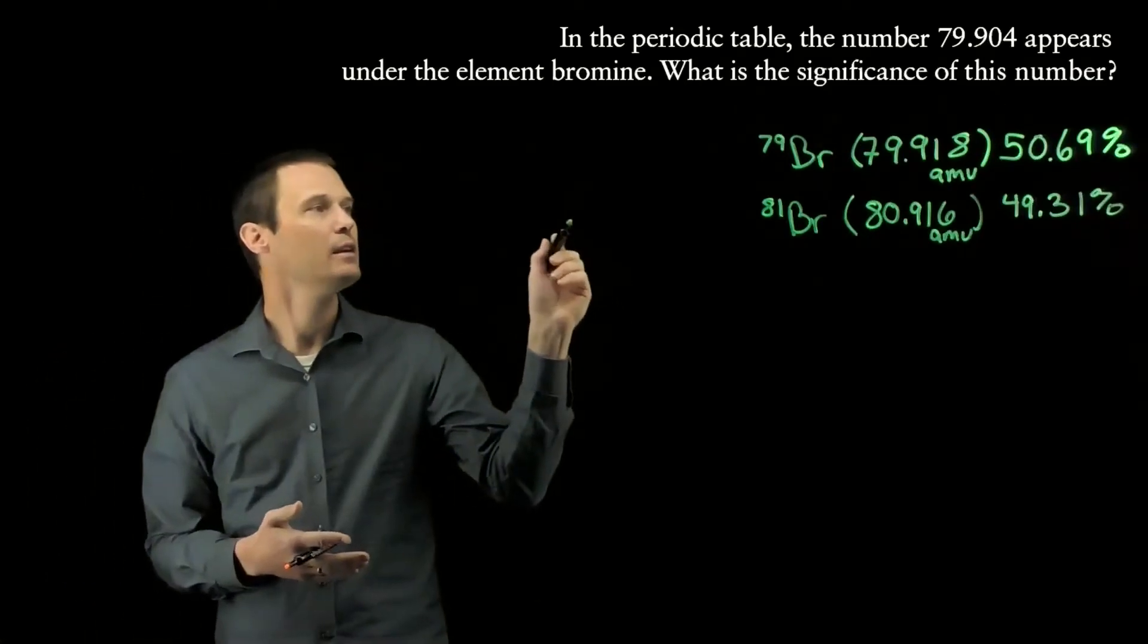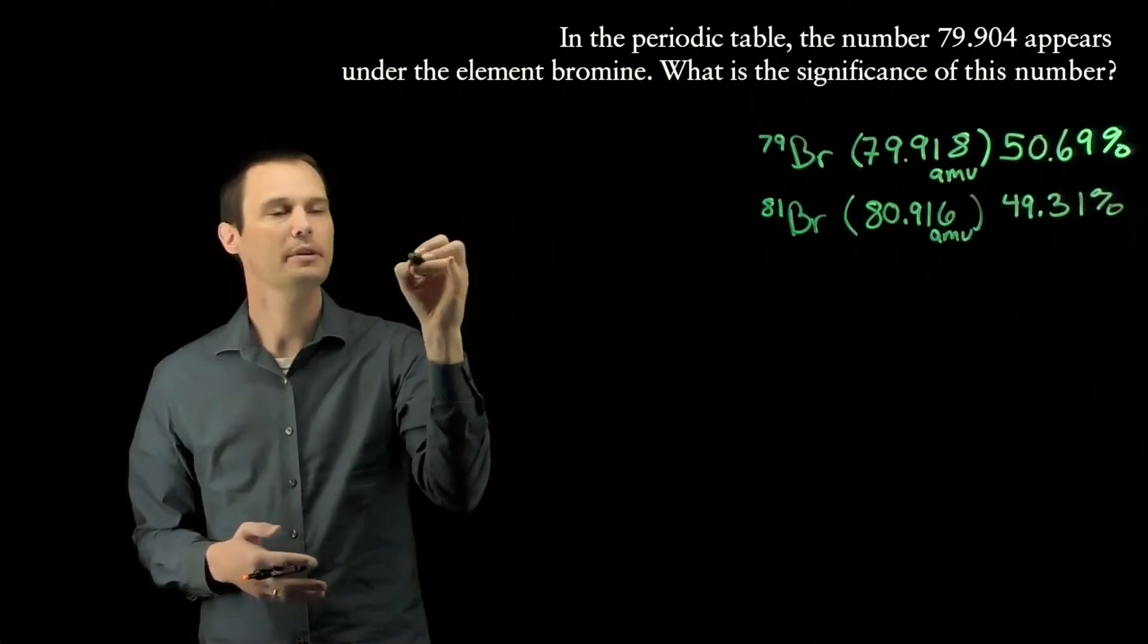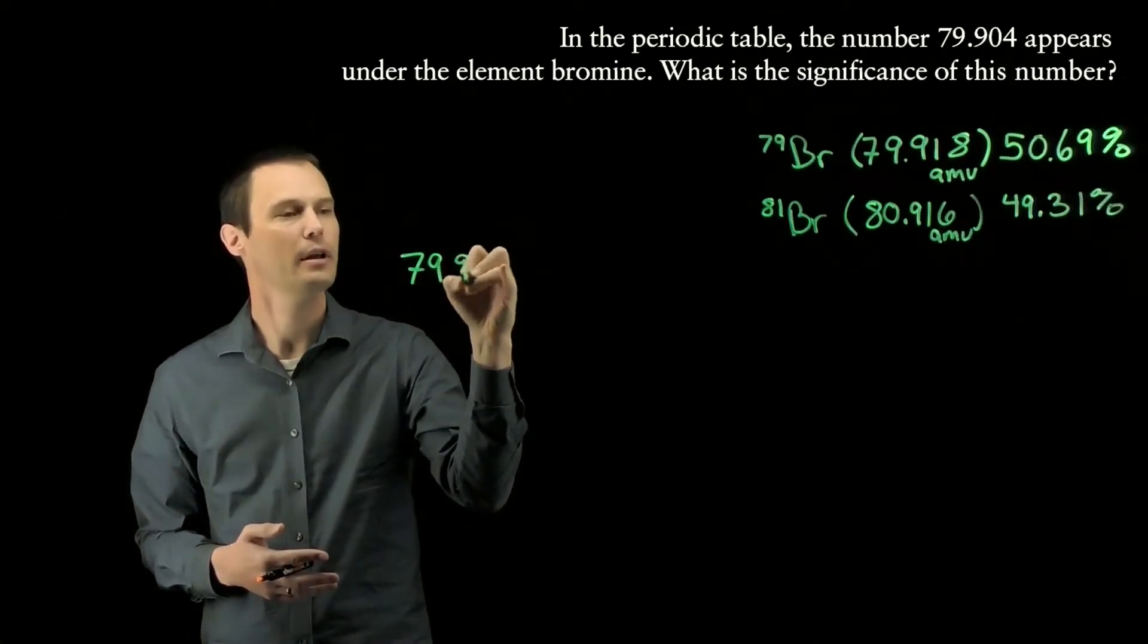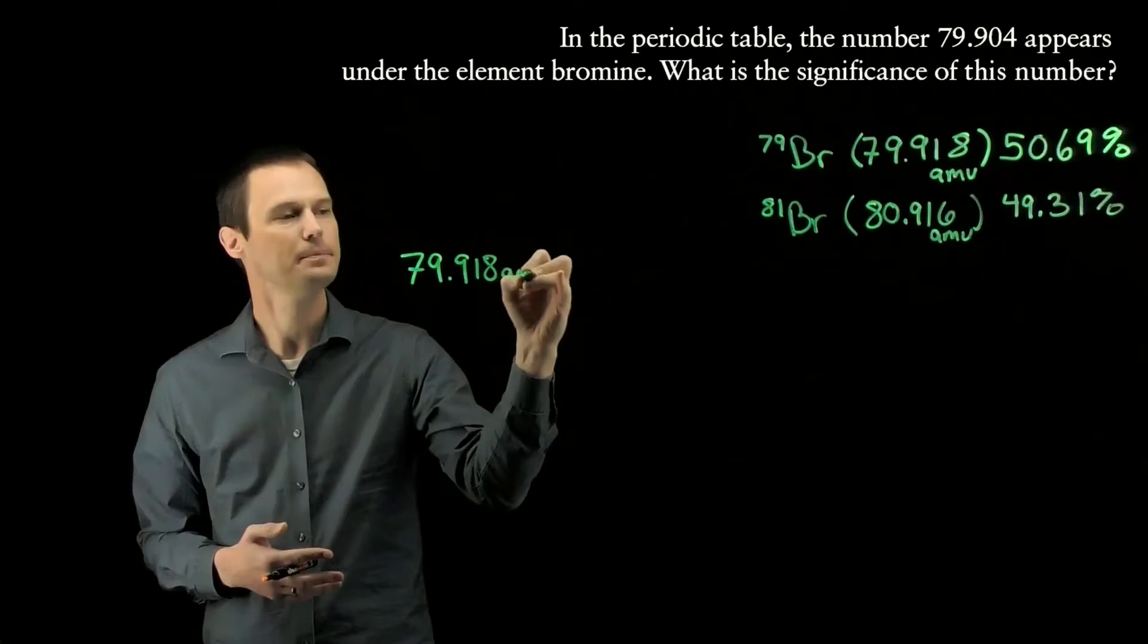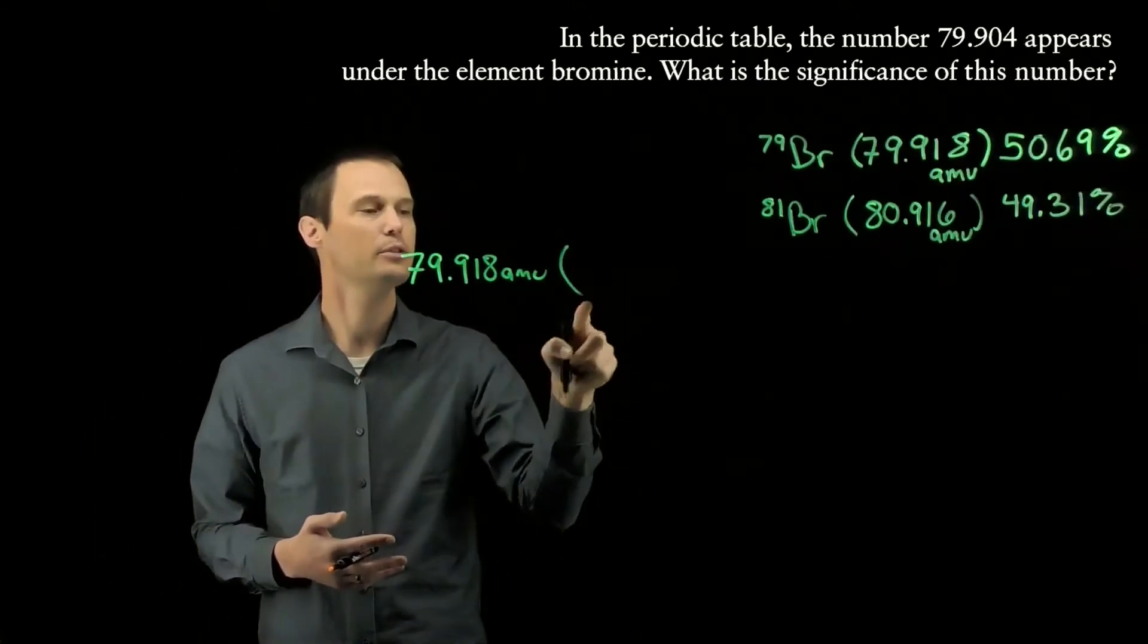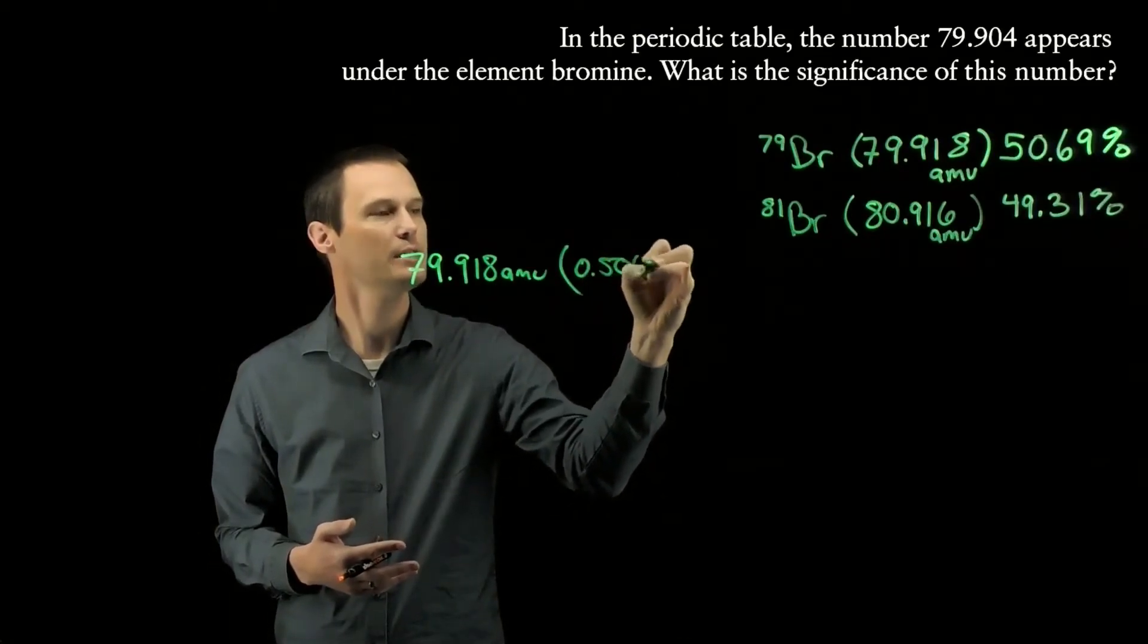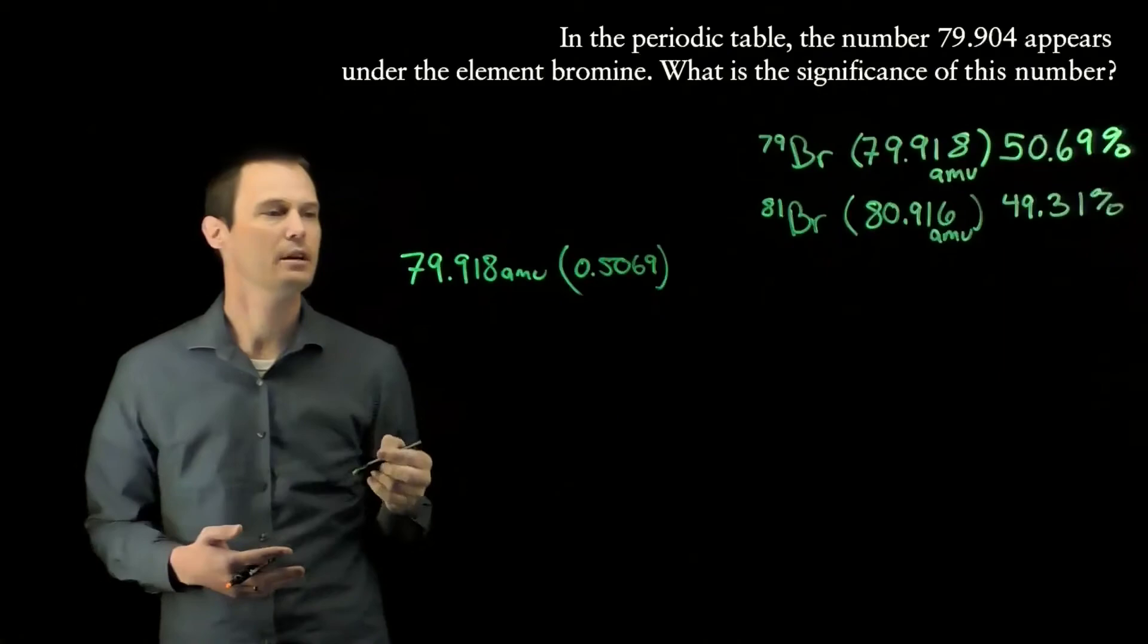We'll take the mass of each isotope, each major naturally occurring isotope, so bromine-79 has an actual mass of 79.918 amu, and we multiply that by its isotopic abundance as a percentage, so 50% would be 0.5069.